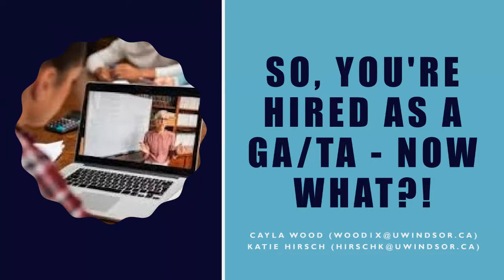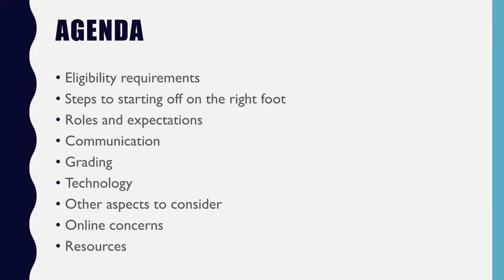My name is Kayla, and I'm going to co-lead this workshop with Katie. Similar to Katie, I'm also a third-year PhD student. We'll first go over some of the basics, including eligibility requirements for being a GA or TA. We assume that most, if not all of you, have already been appointed to your position, so this should be a refresher and a great time to ensure that you are indeed eligible.